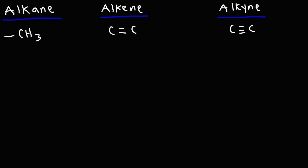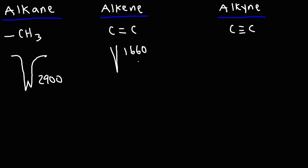Let's talk about alkanes, alkenes, and alkynes. The alkane CH stretch has a signal of around 2,900, which we talked about earlier. The alkene C=C stretch is a weak to medium signal which shows up around 1,660. The C≡C of an alkyne functional group is also a weak signal, showing up around 2,100 to 2,200 wavenumbers.